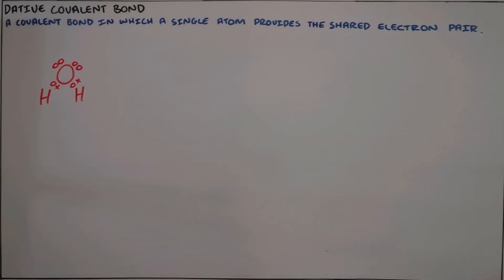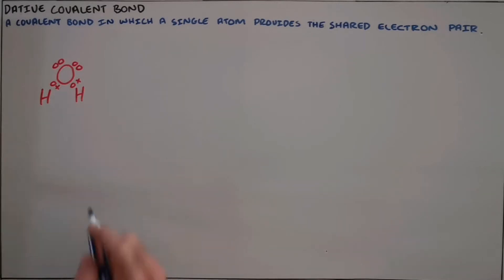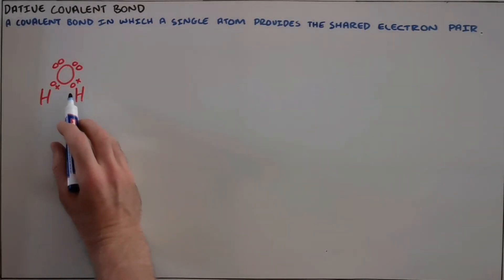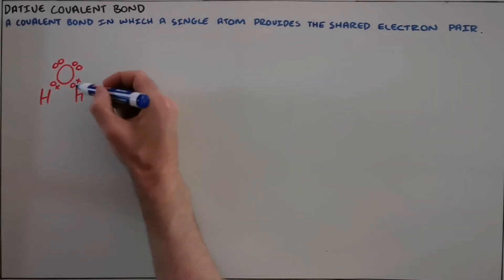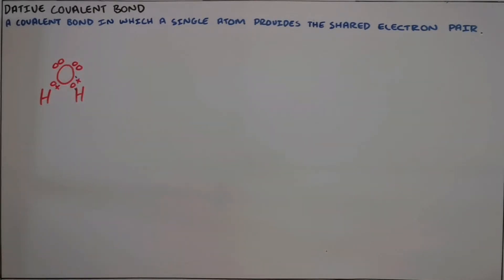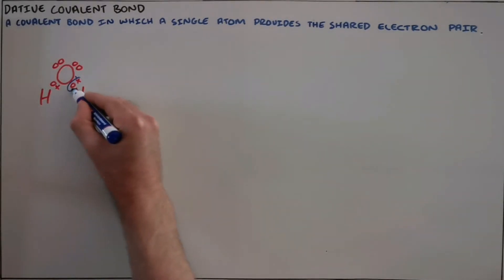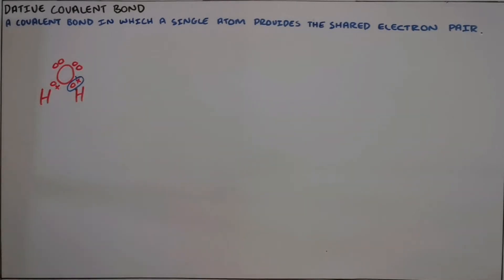A dative covalent bond is a covalent bond in which a single atom provides a shared electron pair. Where a covalent bond would normally form — for example, in a water molecule — a covalent bond forms between the oxygen and the hydrogen. When each one of them provides a single electron, their orbitals overlap and that becomes a shared electron pair, and these two atoms are then held together by their mutual attraction for that shared electron pair.